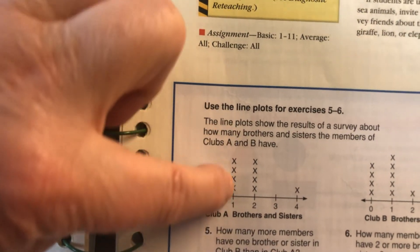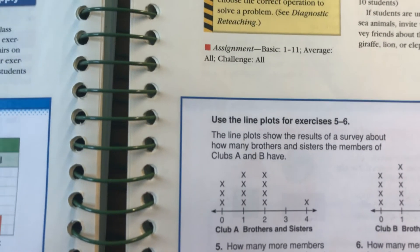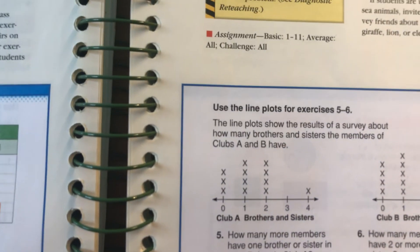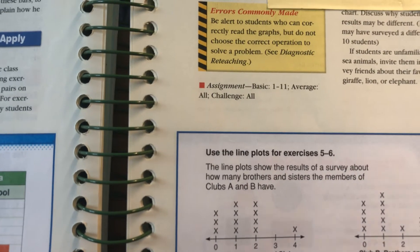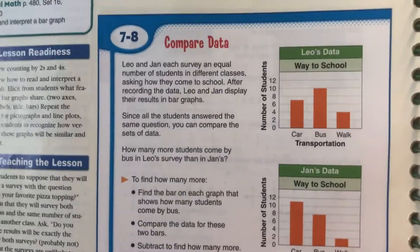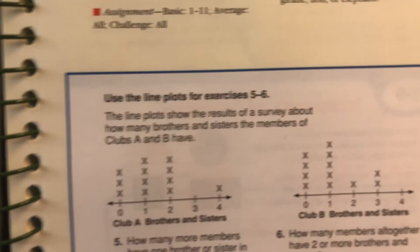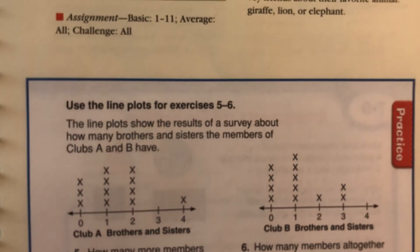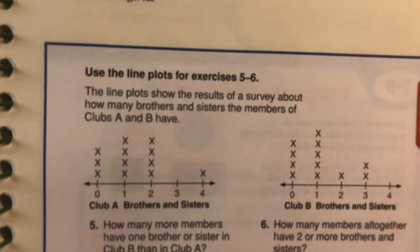Here is the information for Club A, and you look at the number 1 for Club B. You can answer that question by counting up how many X's there are. Depending on what kind of graph you're looking at, that determines what you're comparing. In a bar graph, as long as the information is the same, you're comparing the size of the bars. In a line plot, you're comparing the number of X's for each thing being compared.